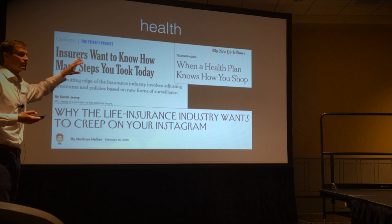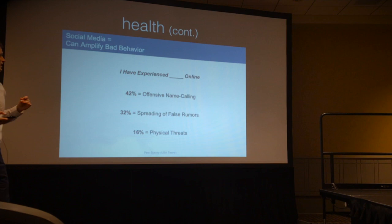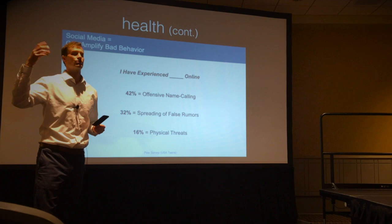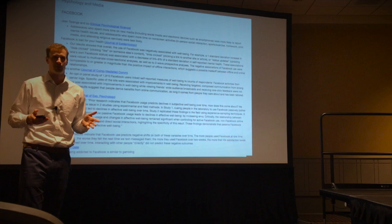On health: insurance companies are trying to vacuum up everything they can find out about us — our purchases, what we post on Instagram — to charge us more for health insurance. And these social media spaces are causing our teens anxiety, stress, and depression. There's an ample amount of studies on what social media is doing to our teenagers, and most of it's bad.